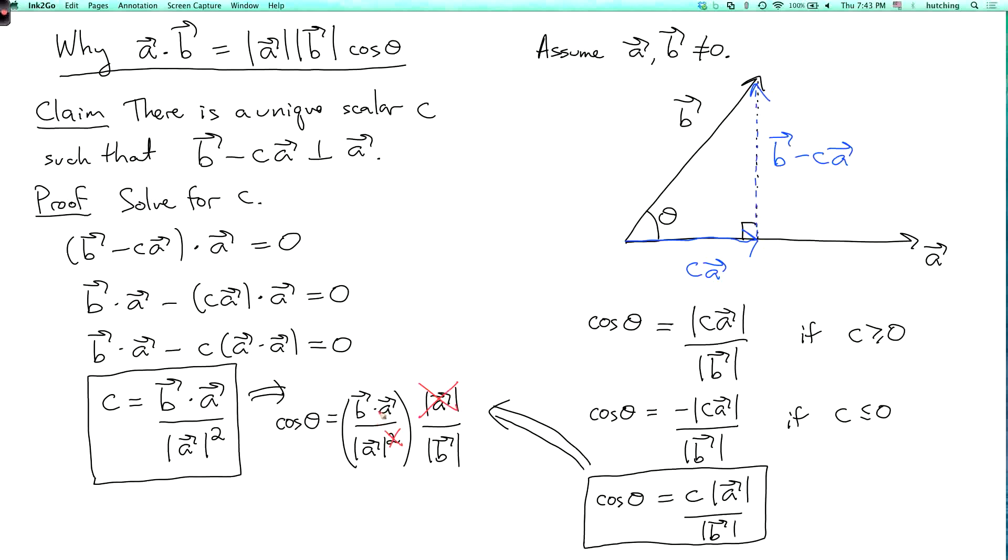And dot product is commutative, so that's also a dot b. So if you just clear the denominator, you get the equation we wanted. So that's the proof.